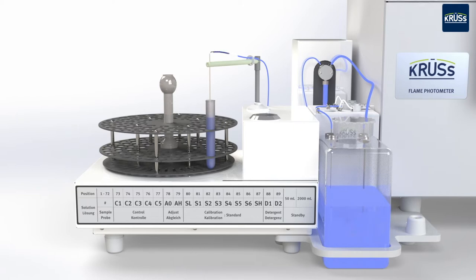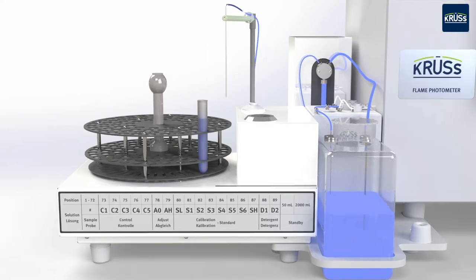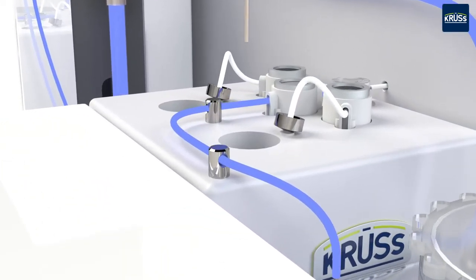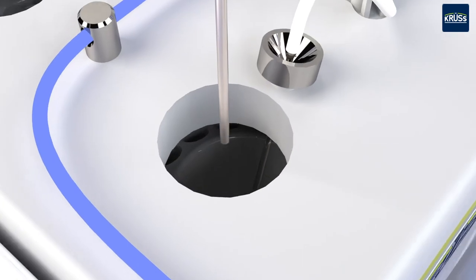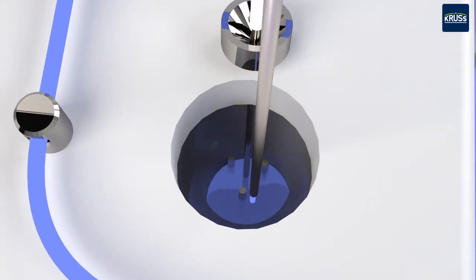Sample material is transferred by a precise dosing unit from the auto sampler to one of two mixing chambers. There it is diluted with an aqueous standby solution to an ideal concentration.